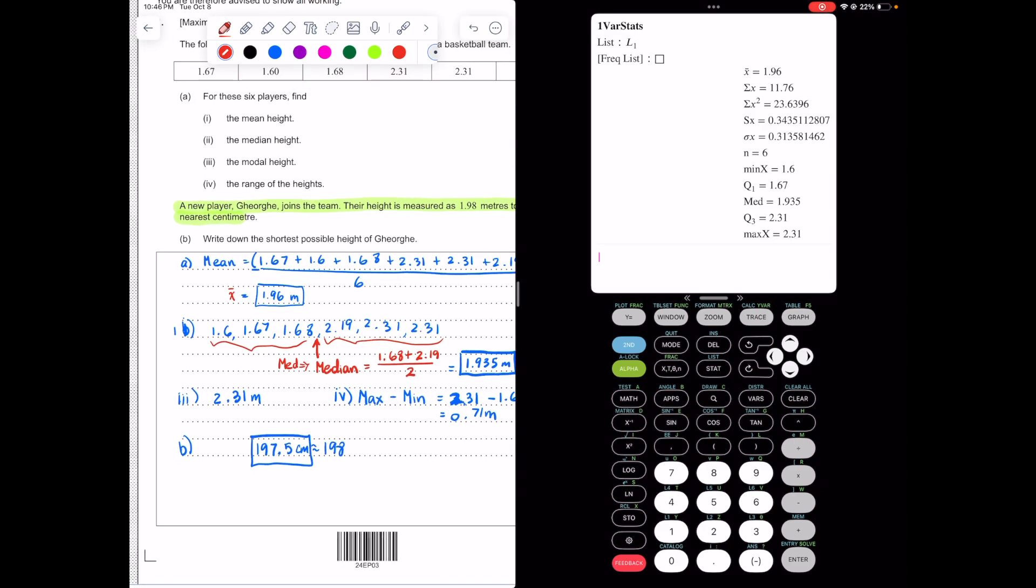The calculator does not give mode. It does give the max and minimum, but you can see that from the list. So that's not really that helpful here. And so this is how you use your calculator to help save time, especially if the list is long.